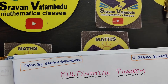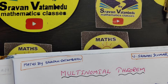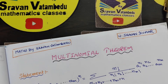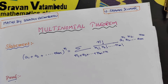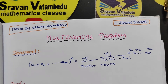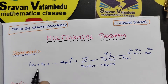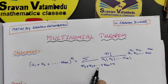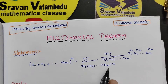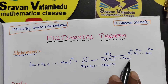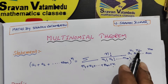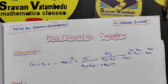In this video lecture, we have the statement and proof of the Multinomial Theorem. The statement is: (a1 + a2 + ... + am)^n equals the summation over n1 + n2 + ... + nm = n of [n! / (n1! · n2! · ... · nm!)] · a1^n1 · a2^n2 · ... · am^nm.